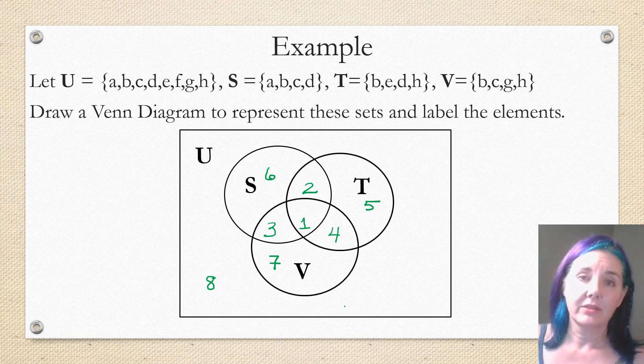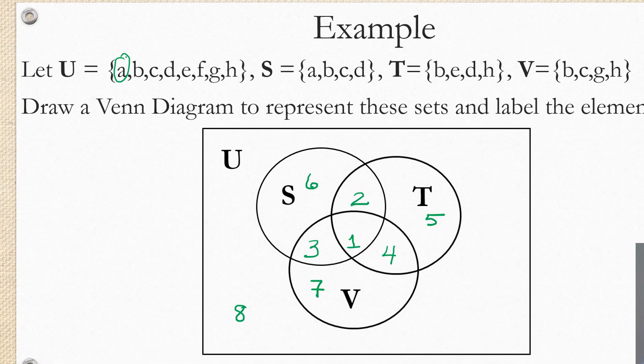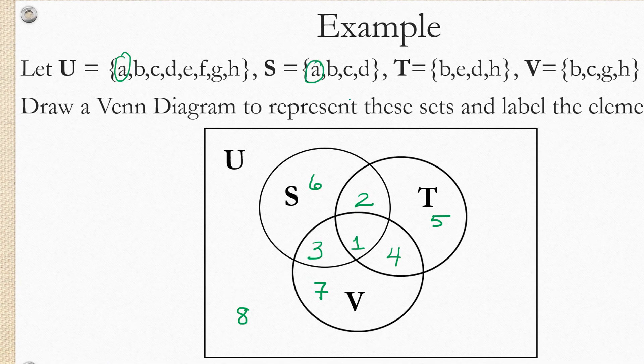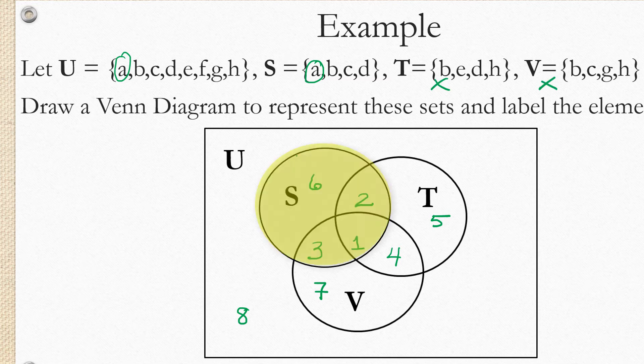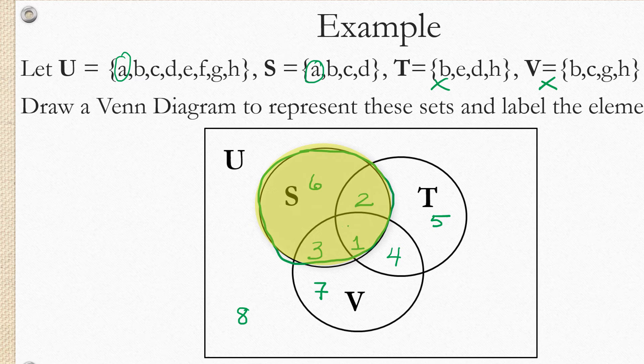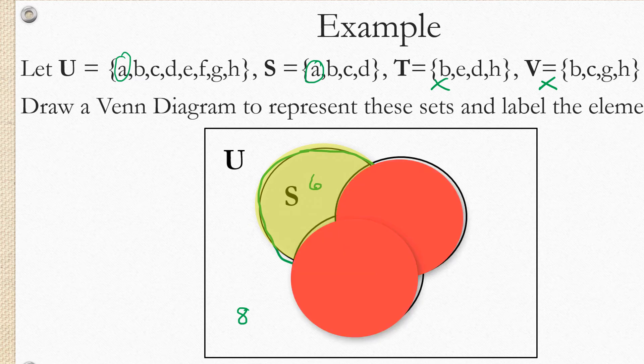All right, so let's talk about the elements one element at a time. Where does element A go? Well, element A is in the set S and it's not in T and it's not in V. So if you look at the set S, it is actually comprised now of four different regions, one, two, three, and six. But the only one that's in S and not in T or V is region six. So we're going to place A in region six.